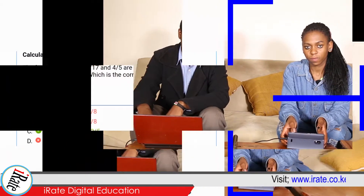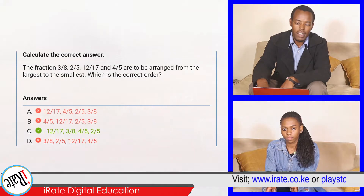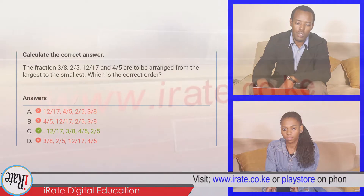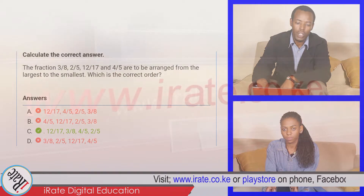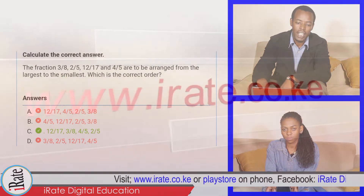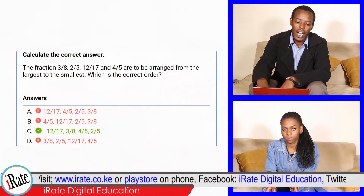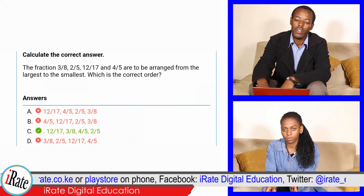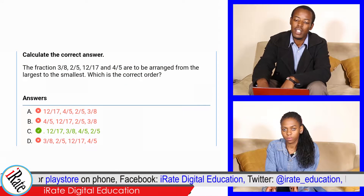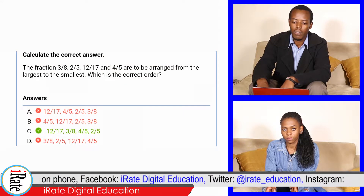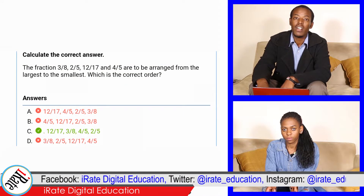Calculate the correct answer. The fractions 3 over 8, 2 over 5, 12 over 17, and 4 over 5 are to be arranged from the largest to the smallest. Which is the correct order?